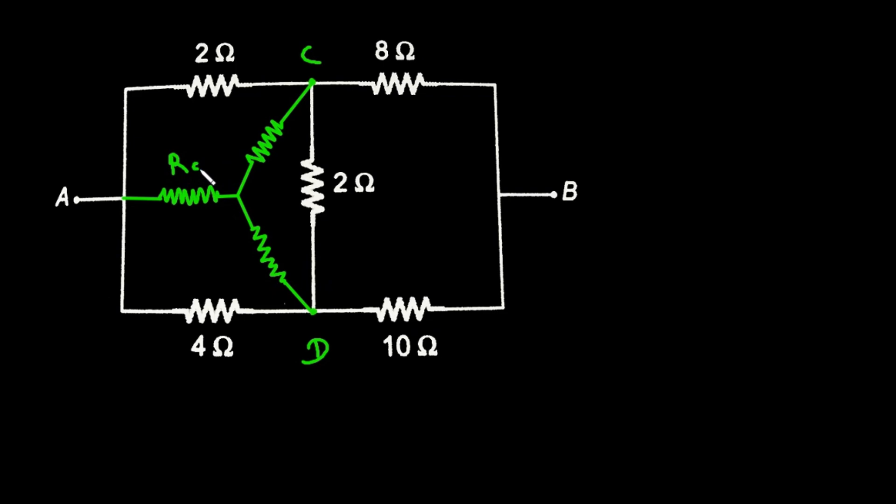Now here let's assume this as R A and this is R C let's say and this is R D because it is connected to this terminal.